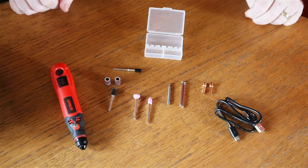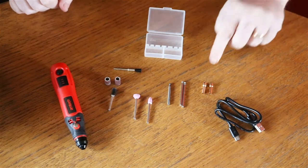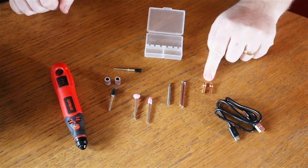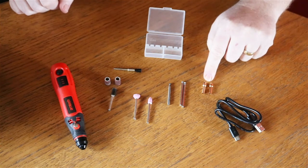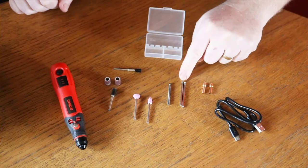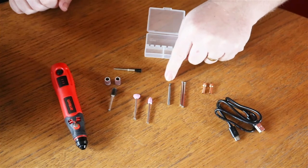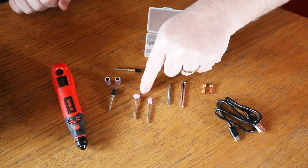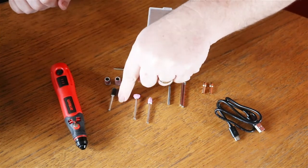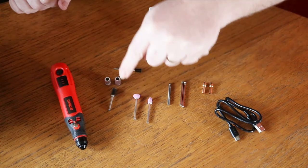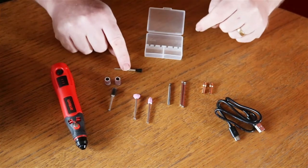The accessories you get are two brass collets, a 2.4mm and a 3.2mm, two diamond coated bits, one tungsten rotary burr, two aluminium oxide grinding wheels, one sanding drum holder and two sanding drums, and a nylon brush.